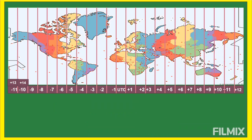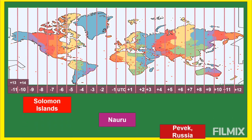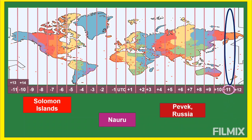Next is GMT+11, eleven hours ahead of UTC, or three hours ahead of the Philippines. These places include Solomon Islands, Nauru, and Tiksi (Russia). By the way, Russia is a very large country spanning 11 time zones, from GMT+2 all the way to GMT+12. There are still other places under GMT+11 that I didn't mention.